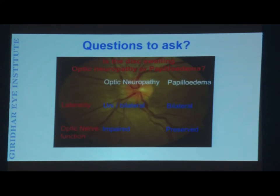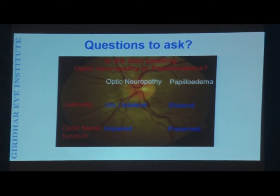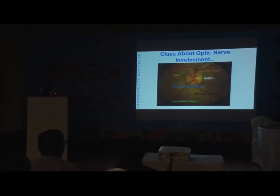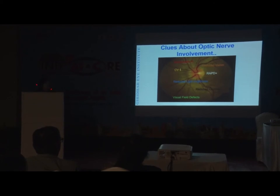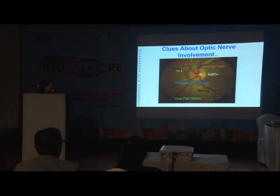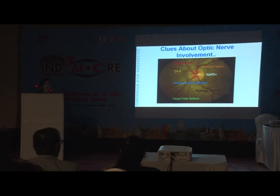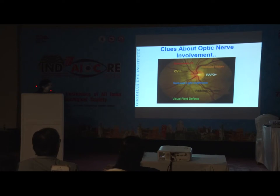This could be a real challenge, and a timely diagnosis can save the patient's vision and sometimes even life. The first thing is to identify: is there optic nerve dysfunction? If it is impaired, you're dealing with an optic neuropathy. The clues are a symptomatic patient with reduced vision, color vision impairment, and presence of an RAPD — the most important clinical sign you should not miss, as it could be the only clue to your diagnosis.